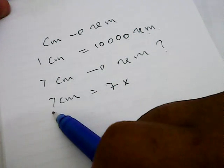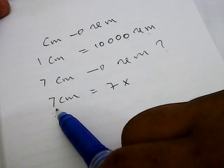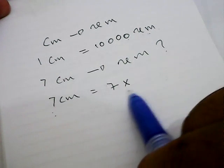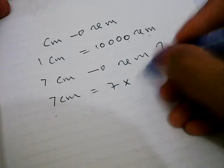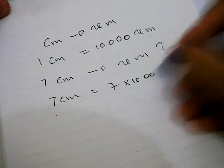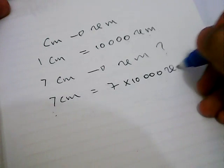In this example case, seven centimeters needs to multiply with ten thousand. Right? So, let's put this number, ten thousand micrometers.